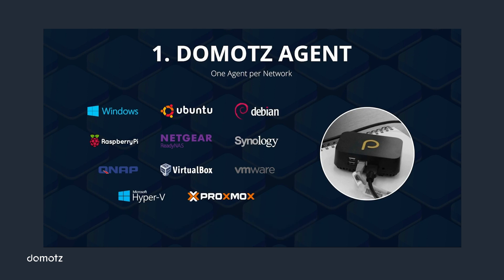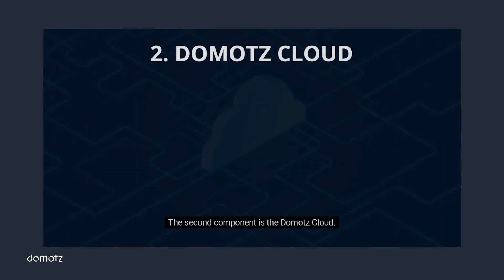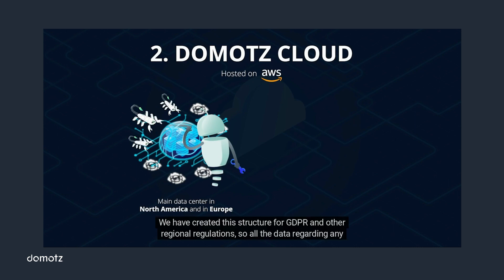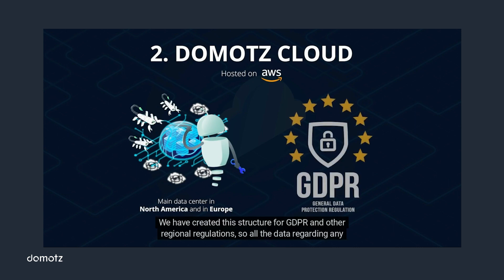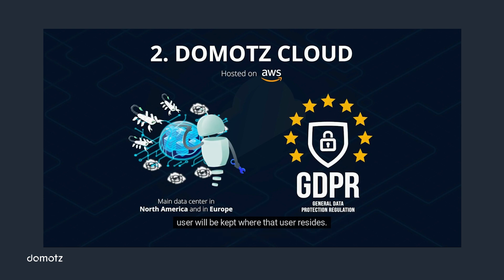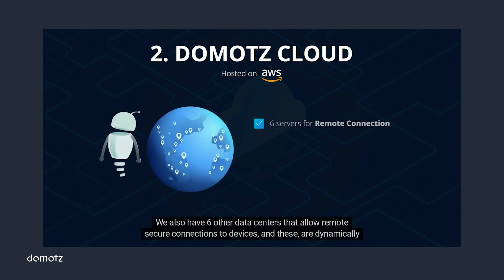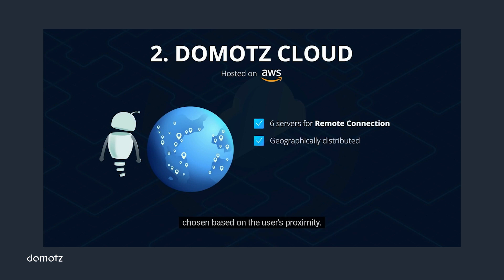The second component is the Domotes cloud, hosted on AWS. It exists in two main data centers, one in North America and one in Europe. We have created this structure for GDPR and other regional regulations, so all data regarding any user will be kept where that user resides. We also have six other data centers that allow remote secure connections to devices, and these are dynamically chosen based on the user's proximity.